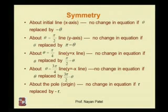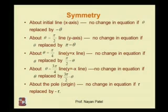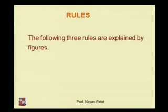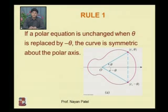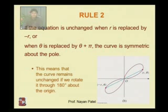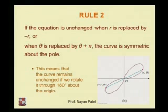There are three symmetry rules for polar curves. First, if the polar equation is unchanged when theta is replaced by minus theta, the curve is symmetric about the polar axis. Second, if the equation is unchanged when r is replaced by minus r, or theta is replaced by theta plus pi, the curve is symmetric about the pole (origin).